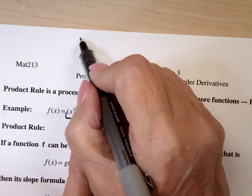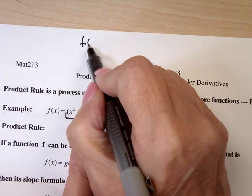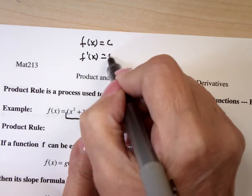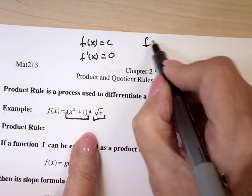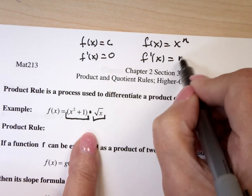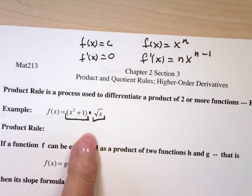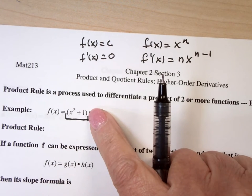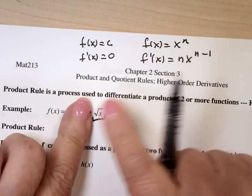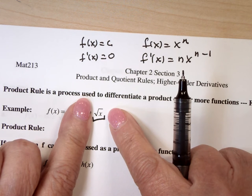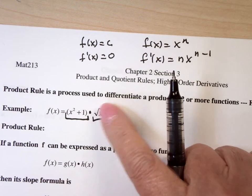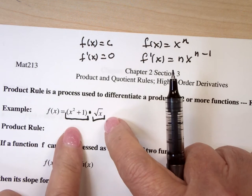One where we have the constant rule that if f of x equals c, then f prime of x equals 0. And that if f of x equals x to the n, then f prime of x equals nx to the n minus 1. Those are the two basics. If I just had this guy, I'd be fine, because that would be just 2x. If I just had this one, that would be fine, because that's 1 half x to the negative 1 half. If there was a plus in there, I'd be fine, because I would be differentiating term by term. The times creates a problem.